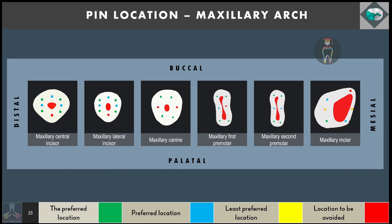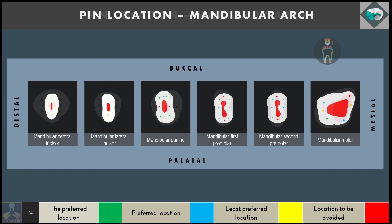In the maxillary arch: in the maxillary central incisor, pins can be placed in all locations except the palatal/cingulum area. The same applies to the lateral incisor. For the maxillary canine, mesial and distal placement should be avoided. For the maxillary first premolar, the mesial surface should be avoided due to a developmental depression. For the maxillary second premolar, pins can be placed in almost all locations. For maxillary molars, pin placement should be avoided at the mesiobuccal line angle.